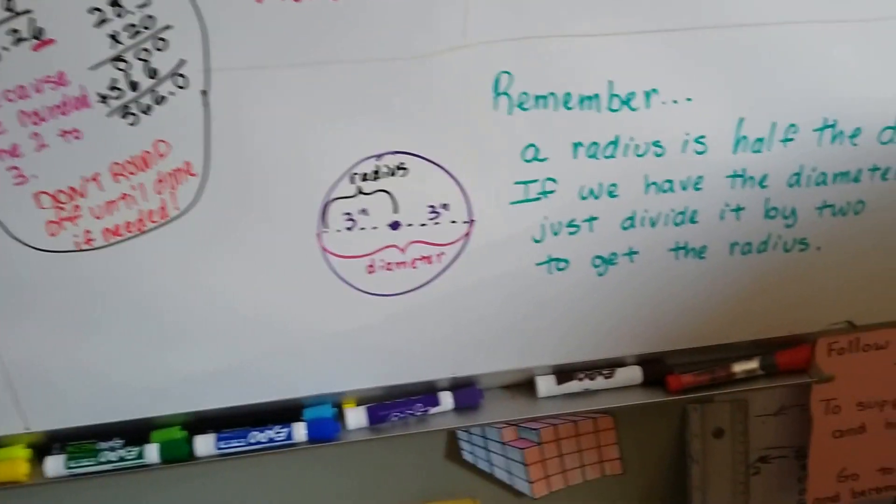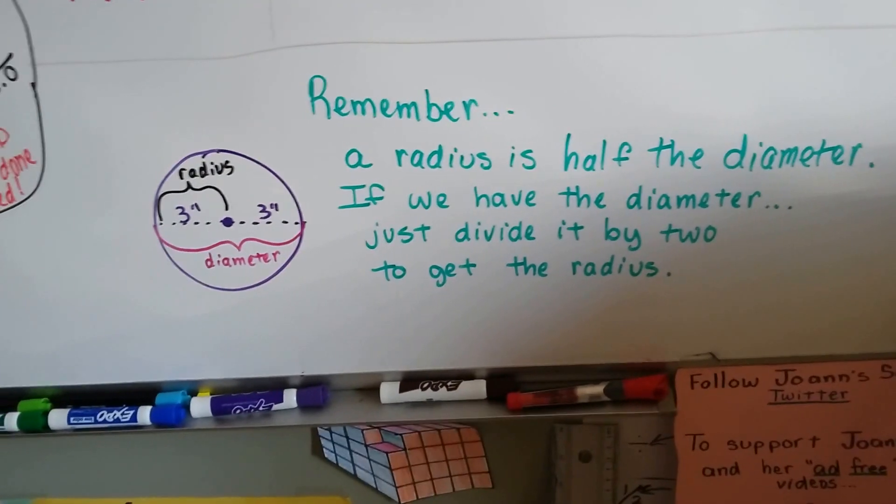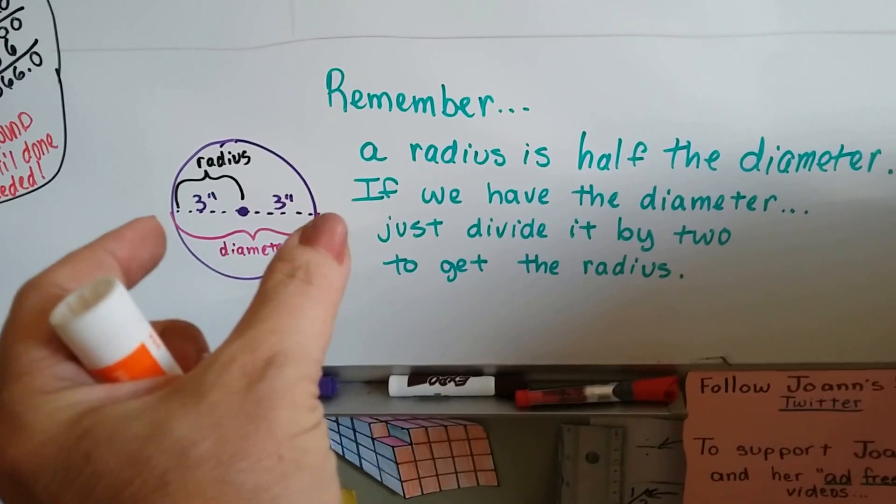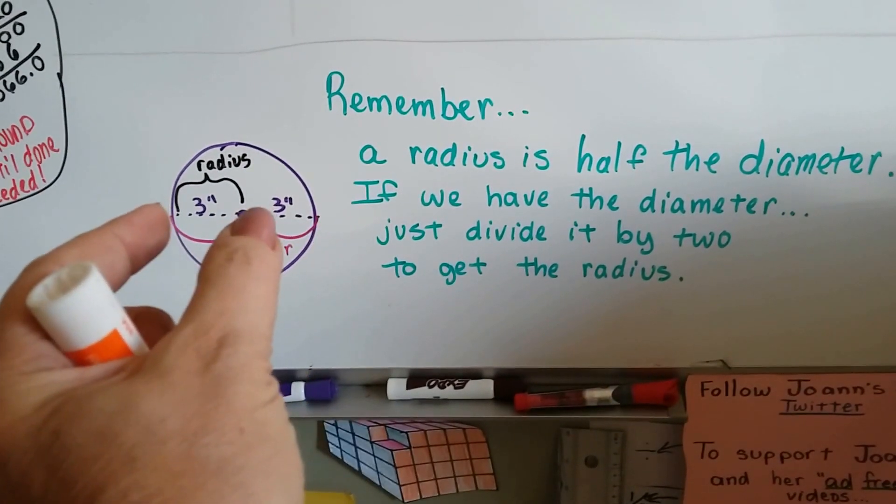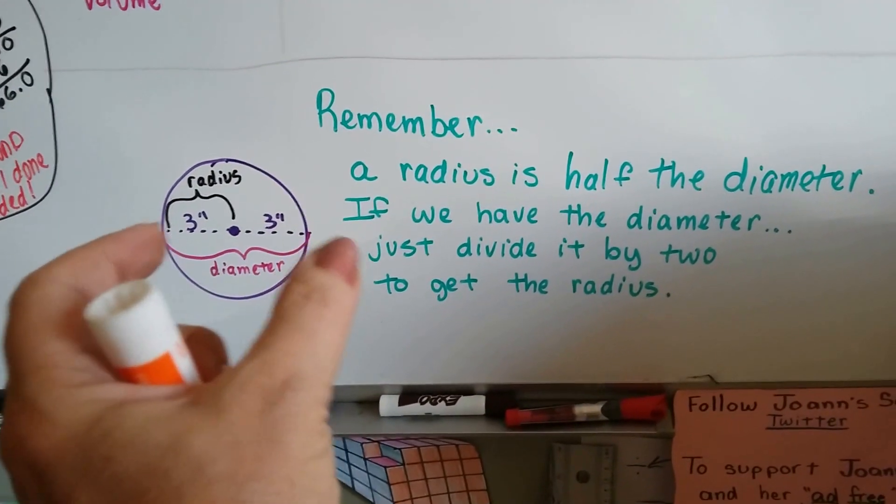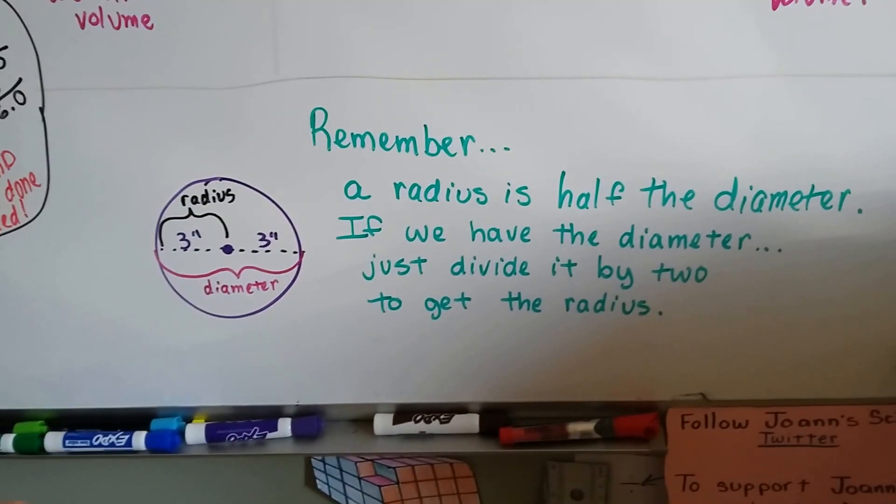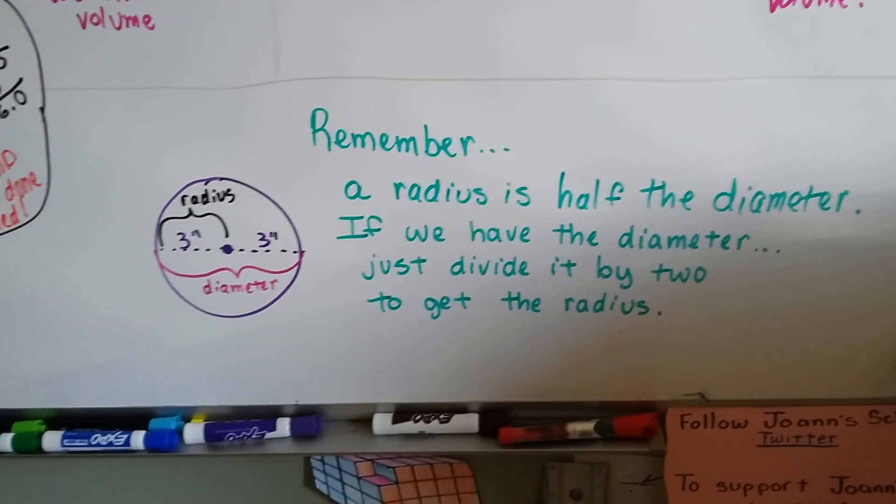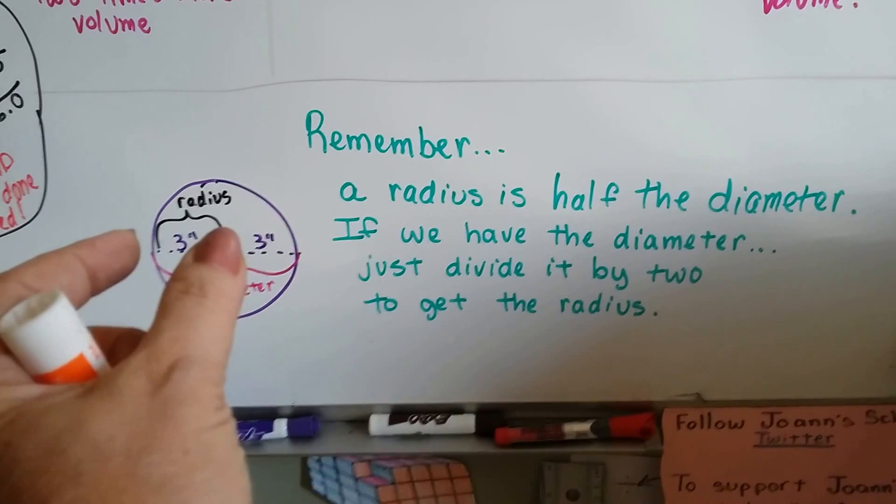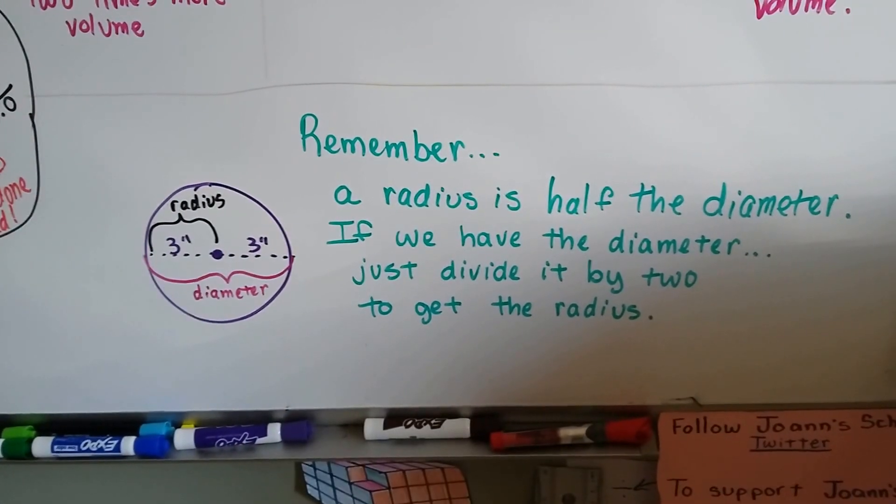So, here's what I want you to remember. A radius is half the diameter. Diameter goes from side to side in the circle. The radius is only half of it. So, if you're given the diameter, and you need to do radius squared, just divide that diameter in 2. The 6 inches would be 3 inches, and then you can do your math.